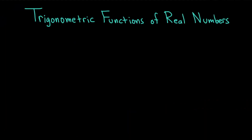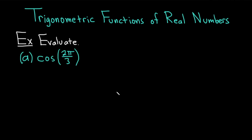Hi, everyone. It's the Mathsorcer here with Chegg. In this video, we're going to discuss trigonometric functions of real numbers. Our example is to evaluate. In part A, we have the cosine of 2 pi over 3. Let's go ahead and work through its solution.